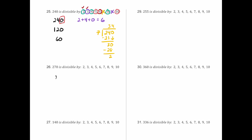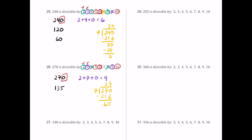For number 26, we have 270. It ends in 0, so 2 works. Half is 135, which is odd, so 4 and 8 fail. The digit sum 2 plus 7 plus 0 is 9, a multiple of both 3 and 9. Since 2 and 3 work, 6 also works. It ends in 0, so 5 and 10 work. Dividing 270 by 7 leaves a remainder of 4, so 7 fails.